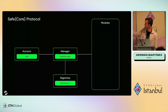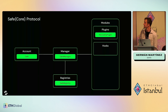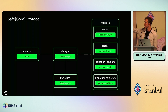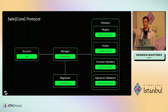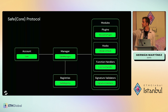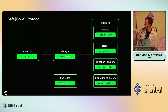So now the manager acts as a coordinator of the registry, the account, and the module — which can be of different types: plugin, hooks, function handlers, signature validators, maybe more in the future. There's a similarity between plugins and the modules we saw before, hooks and SAFE transaction guards, function handlers and the fallback handler. The main difference is that these ones are connected via the manager and are listed in the registry.